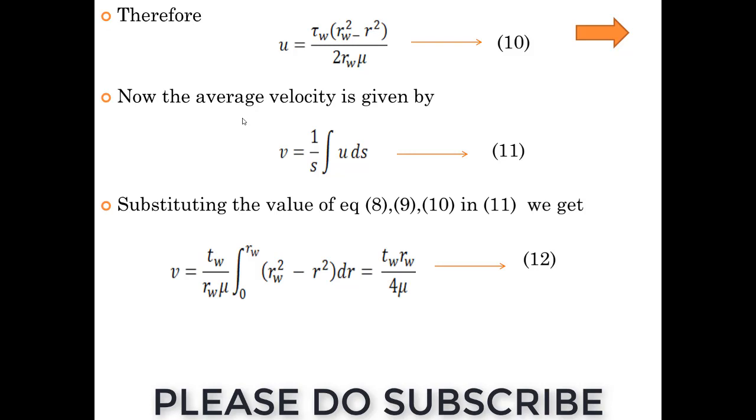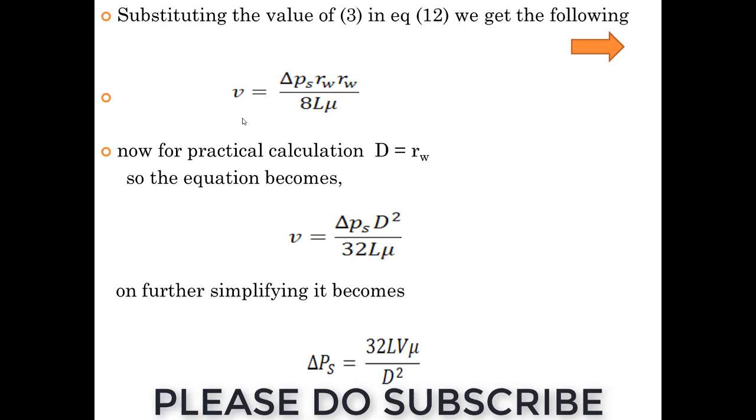On substitution will get mu equals tau W Rw by 4 mu. I am substituting this in equation 12. Finally, we will get velocity V equals delta P times Rw squared by 8 mu L.